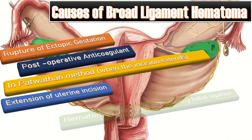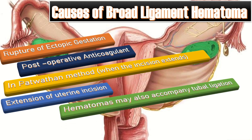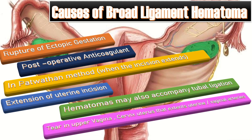Hematomas may also accompany tubal ligation. They may result from a tear in the upper vagina, cervix, or uterus that extends into the uterine or vaginal arteries — most commonly following operative delivery, trauma, or surgery — but may also occur following spontaneous vaginal delivery.